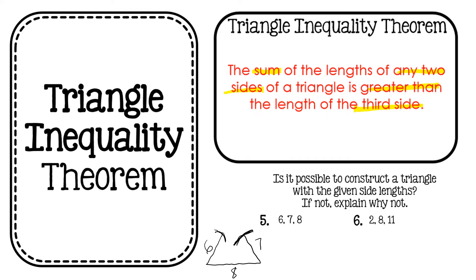By the theorem, the sum of two of the sides has to be greater than the third side. So I'm going to add 6 plus 7 is 13. 13 is greater than 8. So is this a triangle? Yes. It would construct a triangle when we finish this.